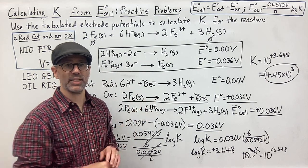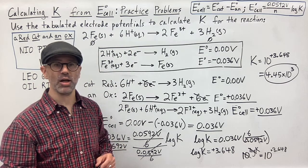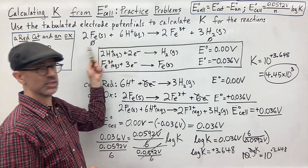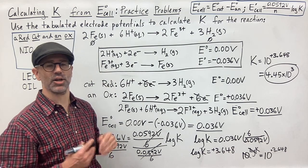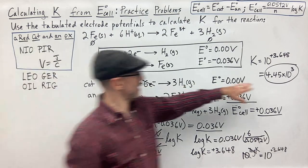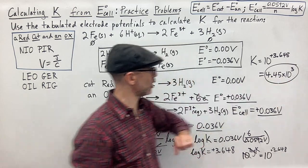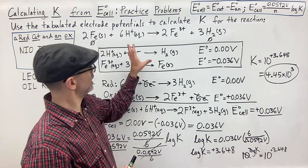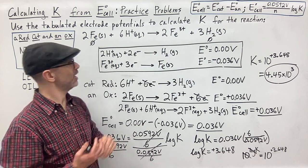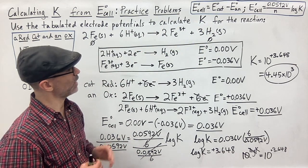This is your equilibrium constant for this reaction. Comparing to the copper problem — where K was around 10⁻¹², meaning very little product formed — iron's K value of about 4450 is very large. This means the equilibrium heavily favors the products, so iron much more readily reacts with acid than copper does, readily forming Fe³⁺ and hydrogen gas.